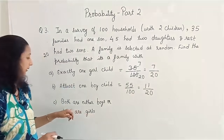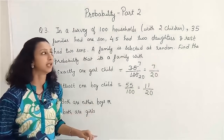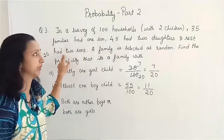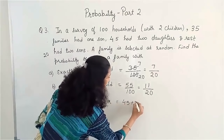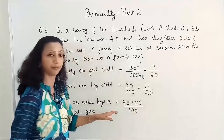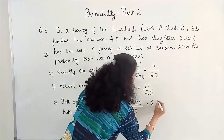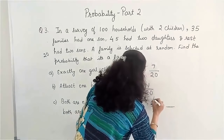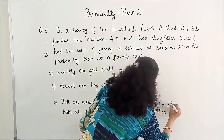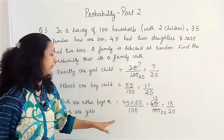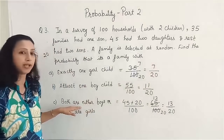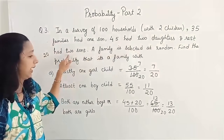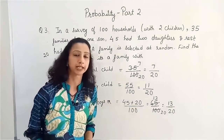The third part: both children are either boys or both are girls, meaning 2 daughters or 2 sons. 45 had 2 daughters and 20 had 2 sons. Adding these two: 45 plus 20 upon 100, since 100 is the total number of outcomes, gives 65 by 100. You can write it as 0.65, or reduce it by dividing by 5 to get 13 by 20. So the probability is 13 by 20 or 0.65.